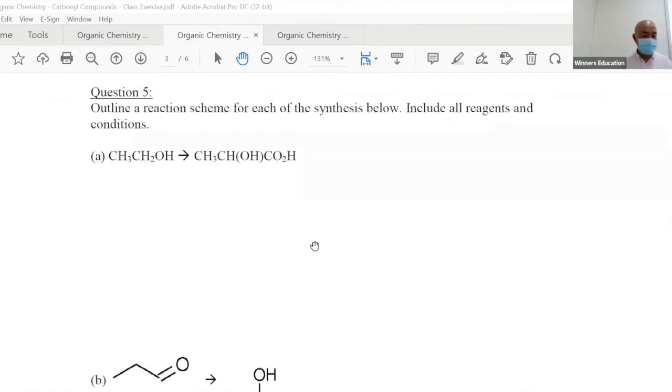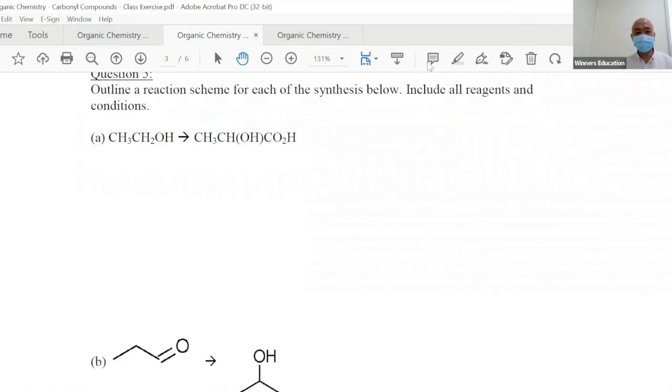Okay, here we go. Reaction scheme - we know what to do already, right? It's about counting that number. First thing, ask yourself: what is it? Two carbon. Next, this is three carbon.